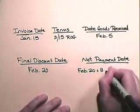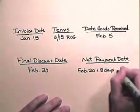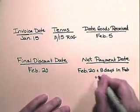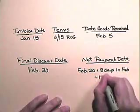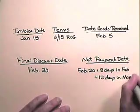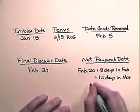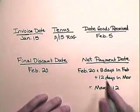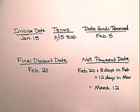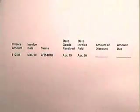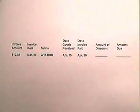The net payment date is 20 days after the final discount date of February 20th. Counting 8 days remaining in February plus 12 days in March gives us a net payment date of March 12th.